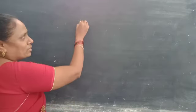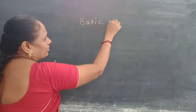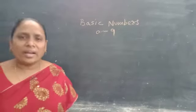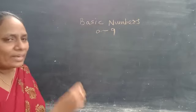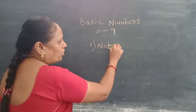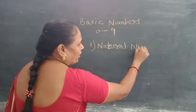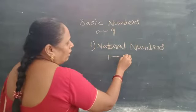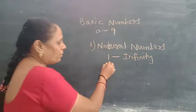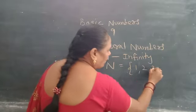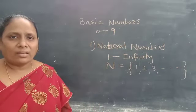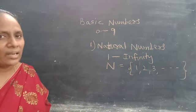Do you know what are the basic numbers? The basic numbers in mathematics are from 0 to 9. These numbers are divided into natural numbers and whole numbers. Natural numbers are called counting numbers. The set of numbers from 1 to infinity are called natural numbers. These are represented by the letter N and written as 1, 2, 3 and so on. The first or least natural number is 1, and the greatest number is infinity, which does not exist.